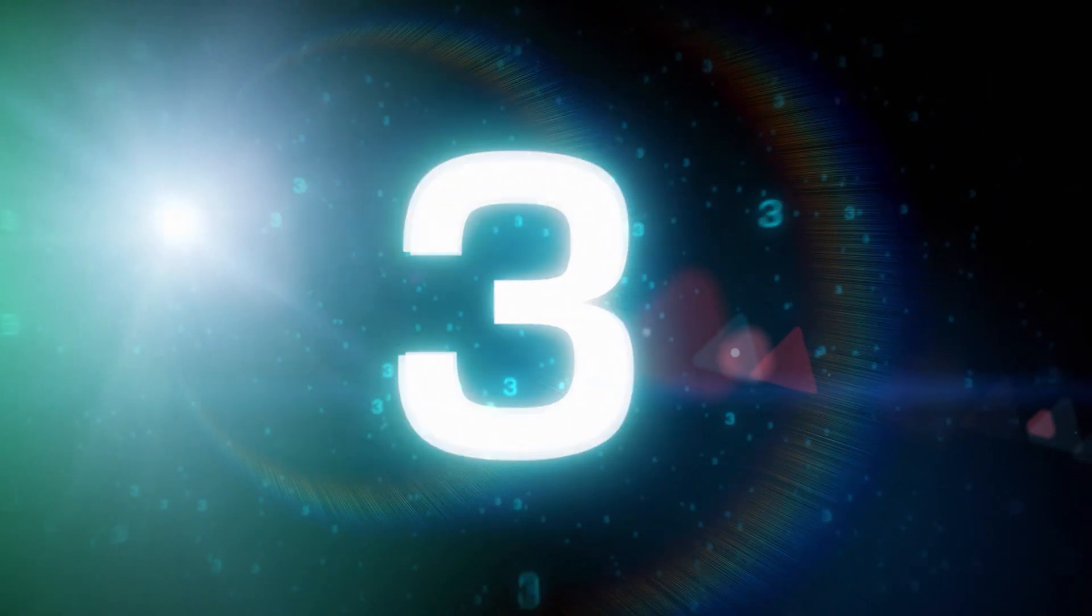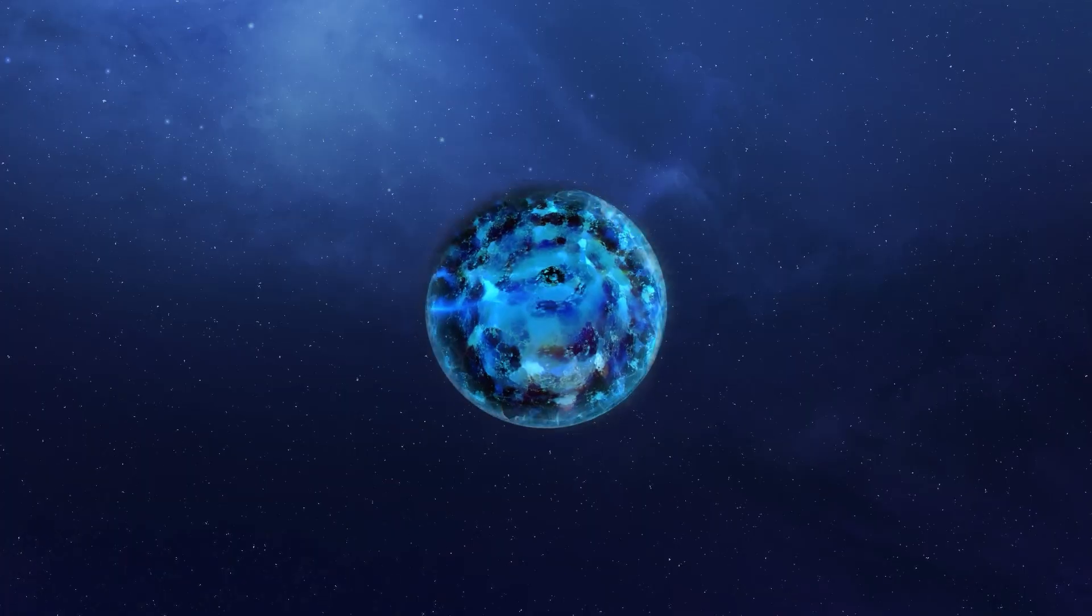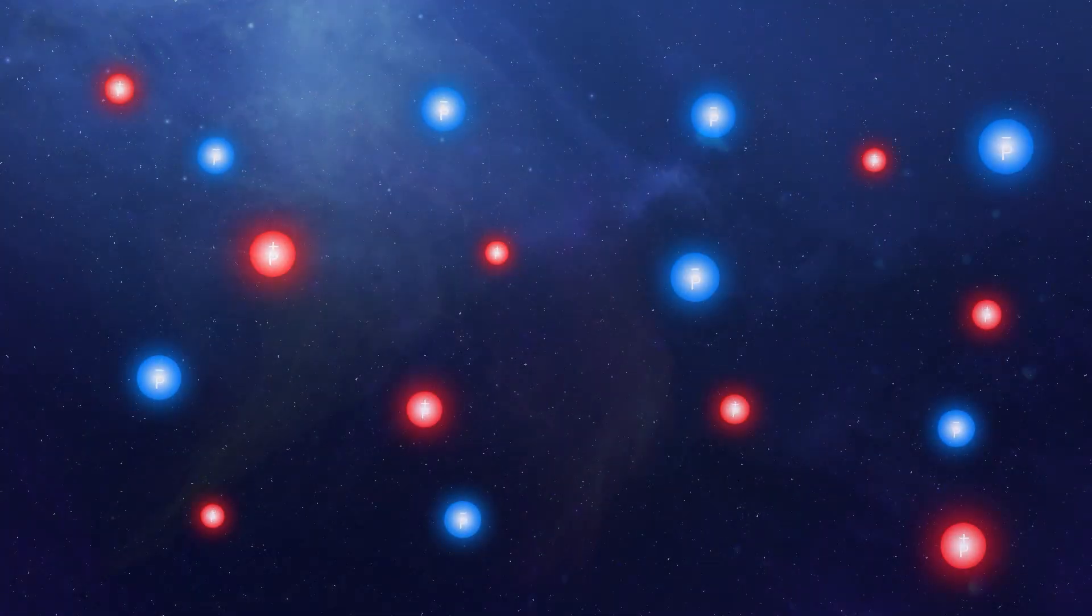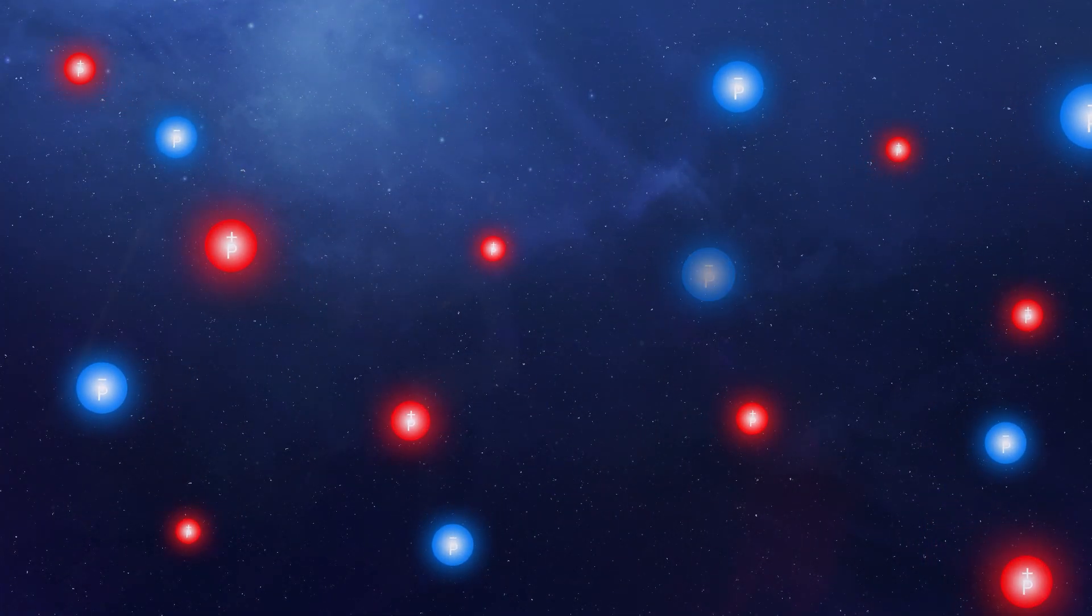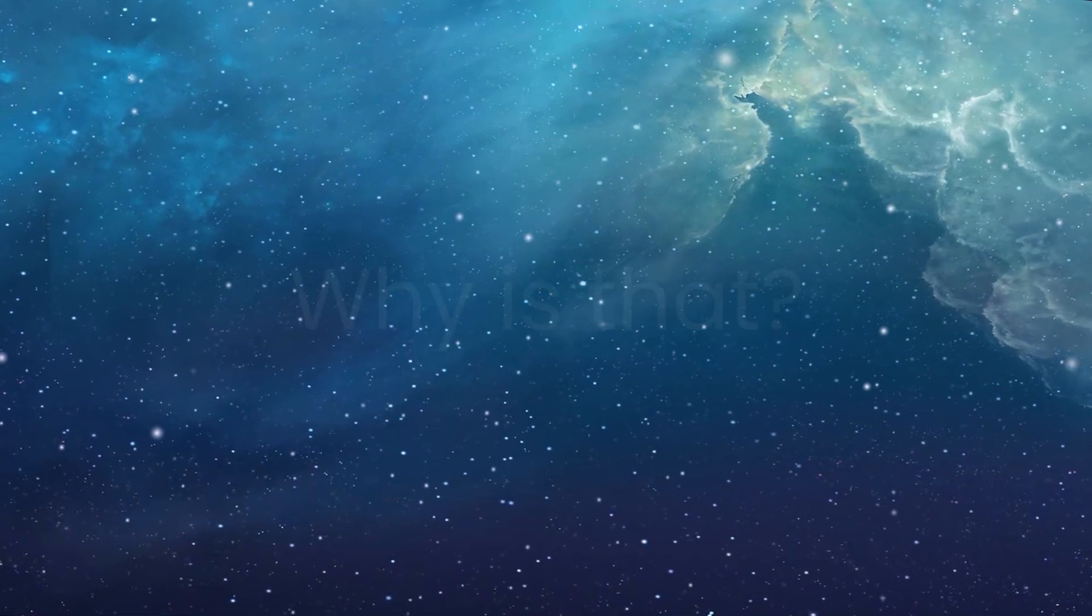Number 3: Antimatter. Antimatter is one of the rarest substances in existence, and weirdly, we still don't know why. When the universe was born, matter and antimatter should have been created in equal amounts. But today, the universe is full of matter and almost no antimatter. Why is that? We don't know. Something happened early in the universe that made matter win.